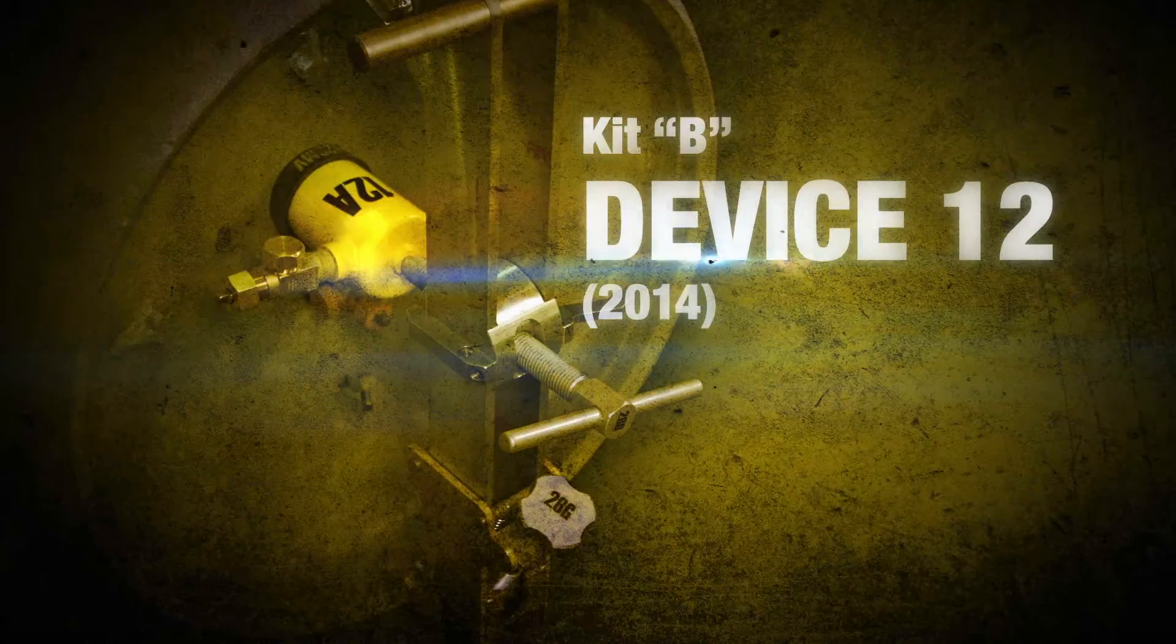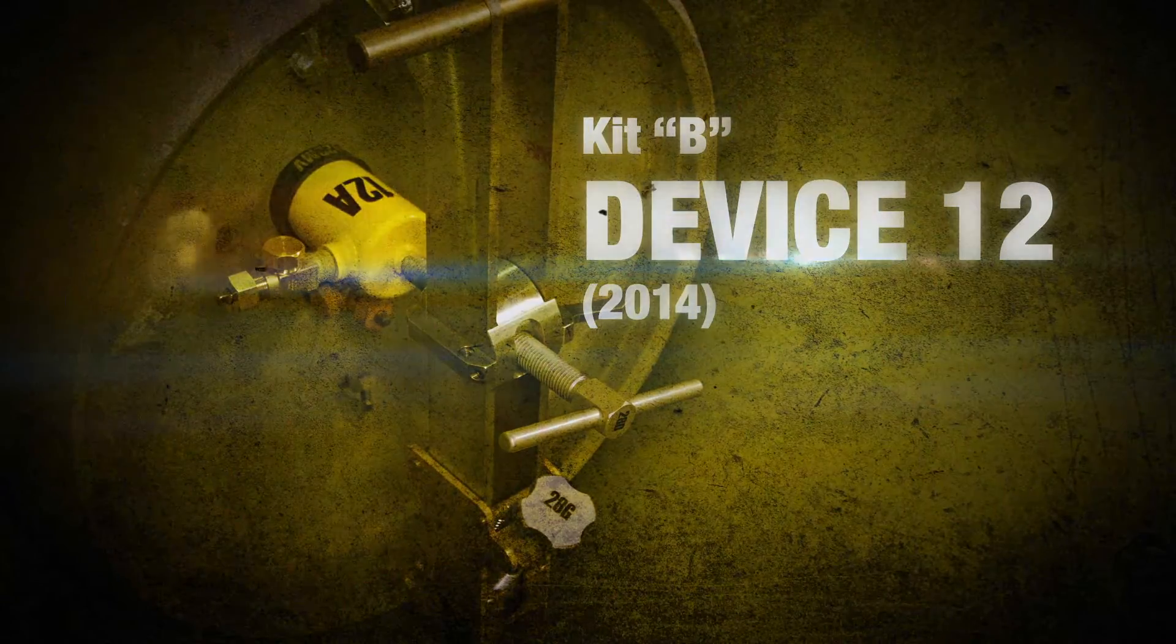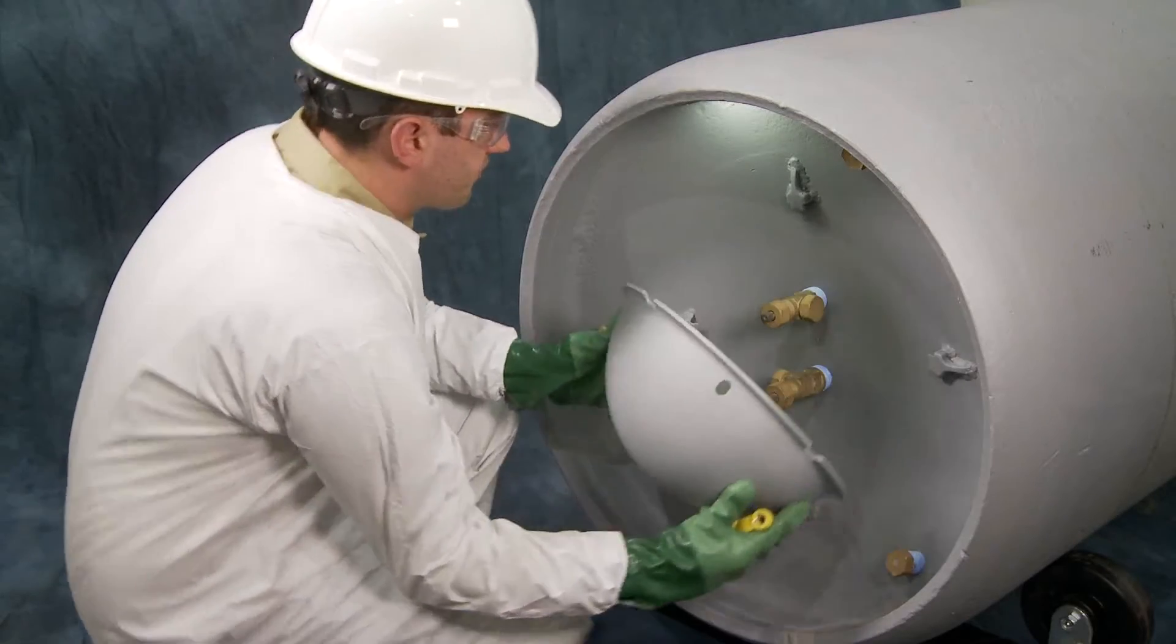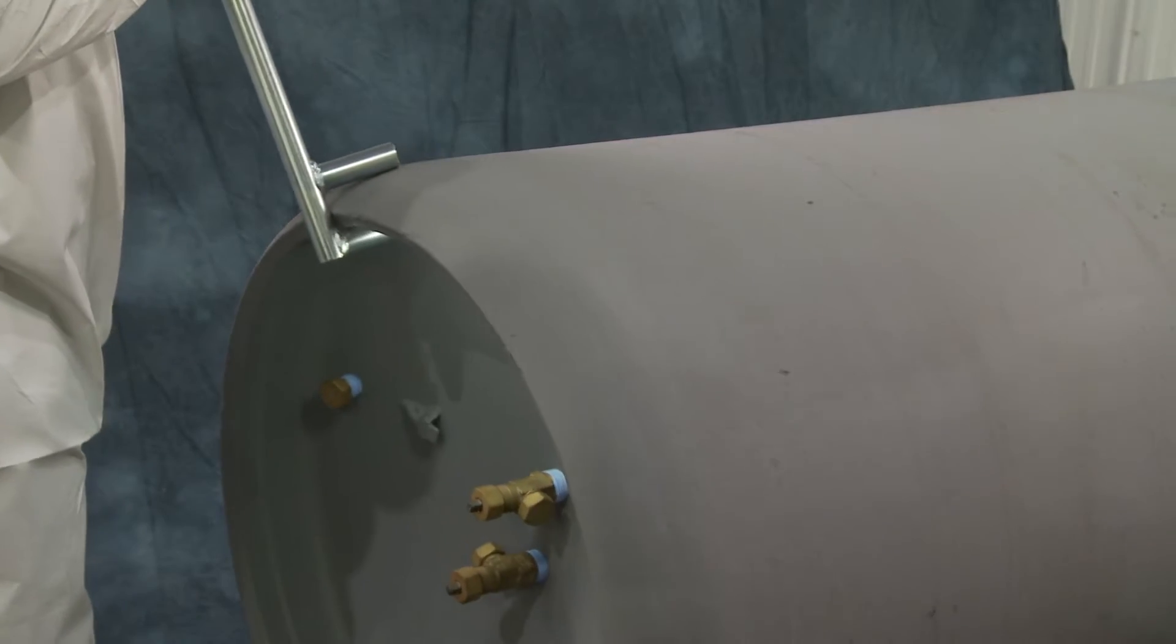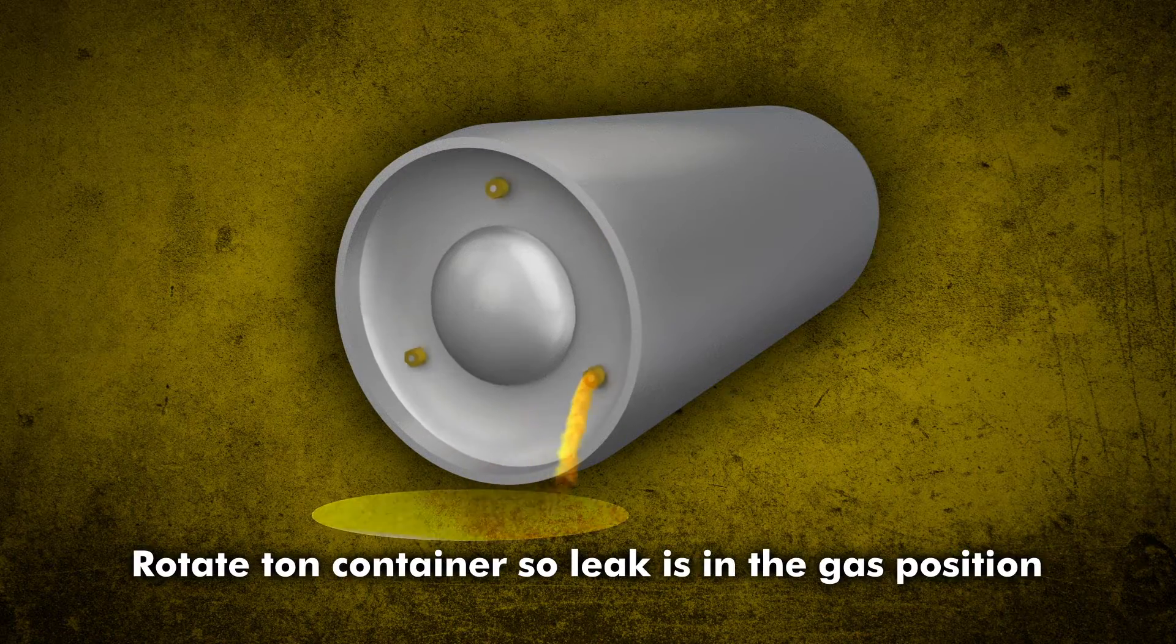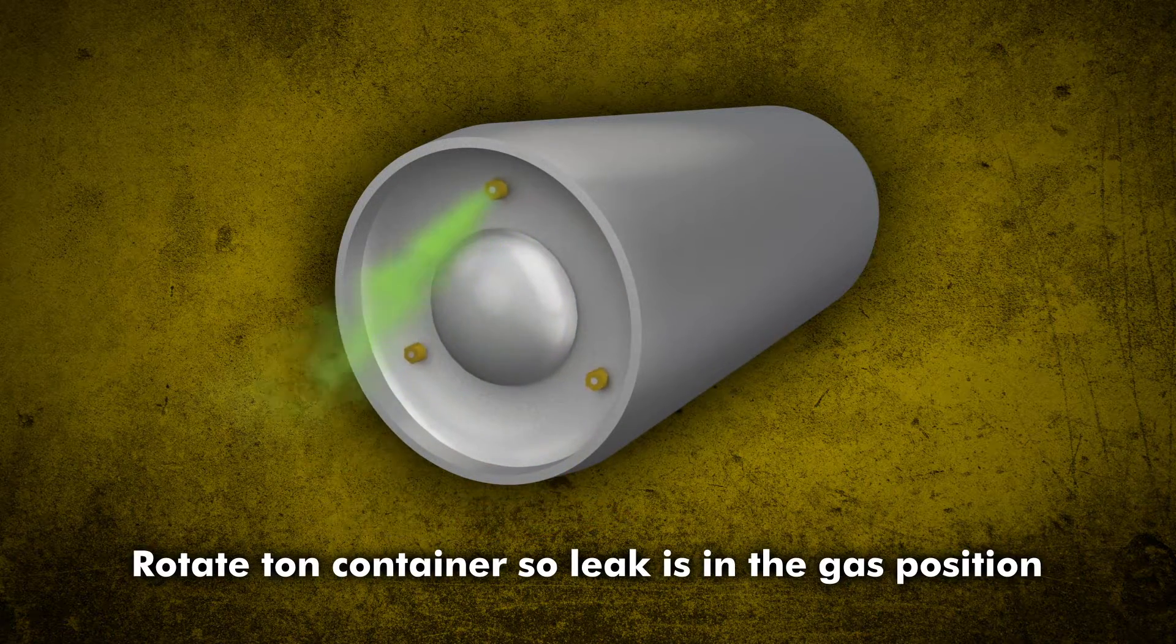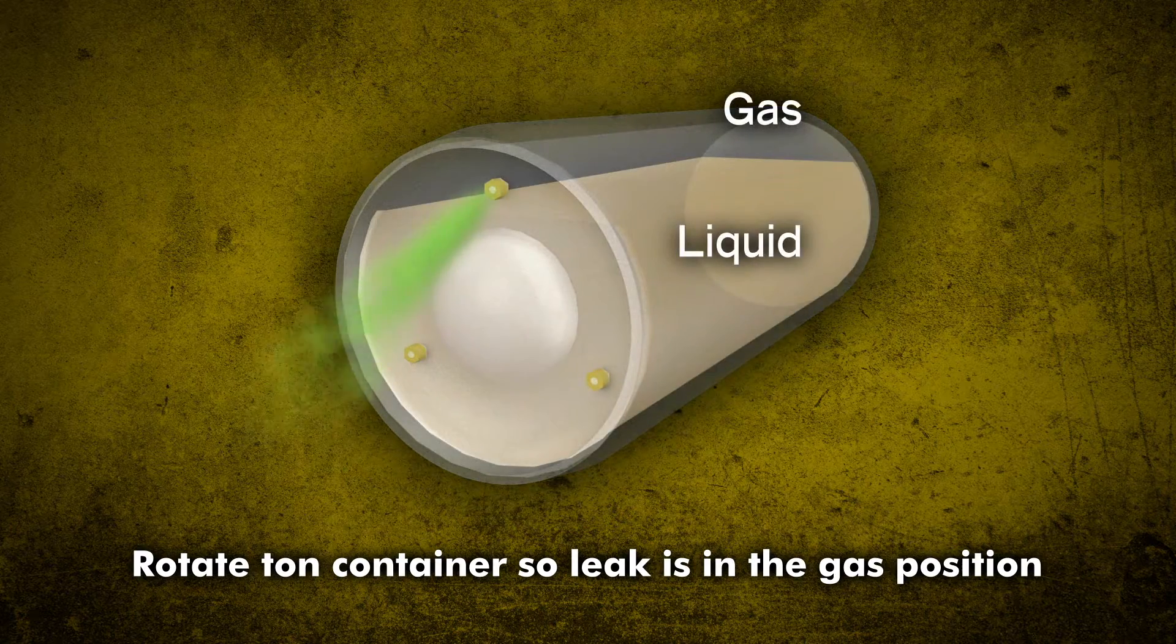Device 12 can be used to contain all leaks in and around the container valves. Remove the valve protective hood if in place and position the container so that the leaking valve is in the top or gas position. This results in a chlorine gas leak and not a liquid leak.